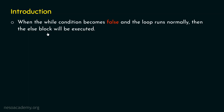We can use the else block for this purpose. When the while condition becomes false and the loop runs normally — meaning there must not be any abnormal termination because of the break keyword — then the else block will be executed. So the else block will be executed only when the while condition becomes false and not when the break keyword is encountered.